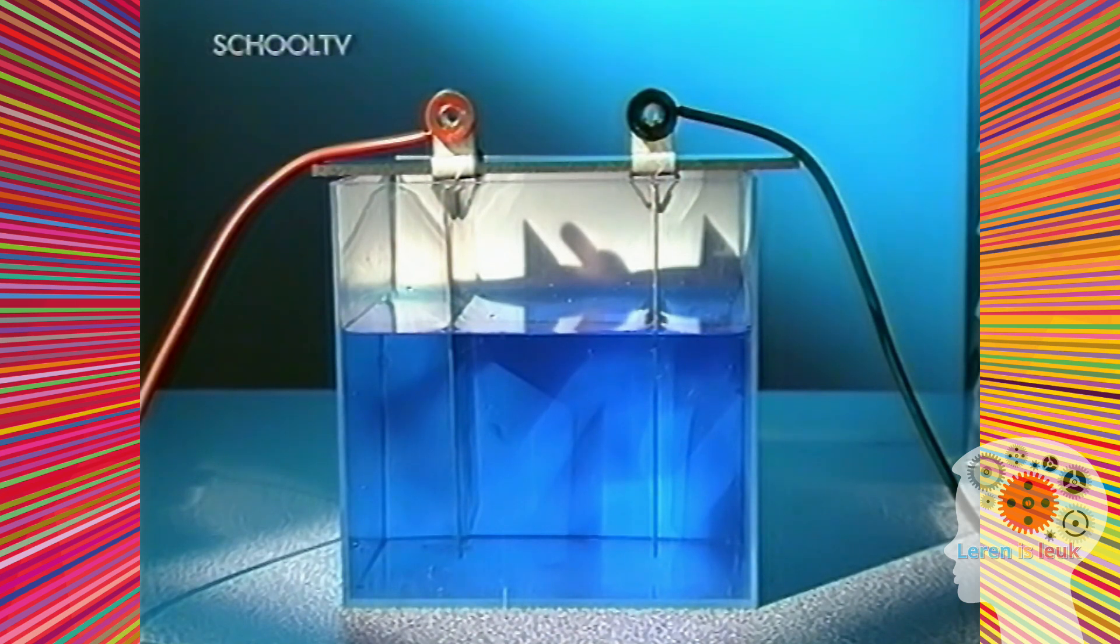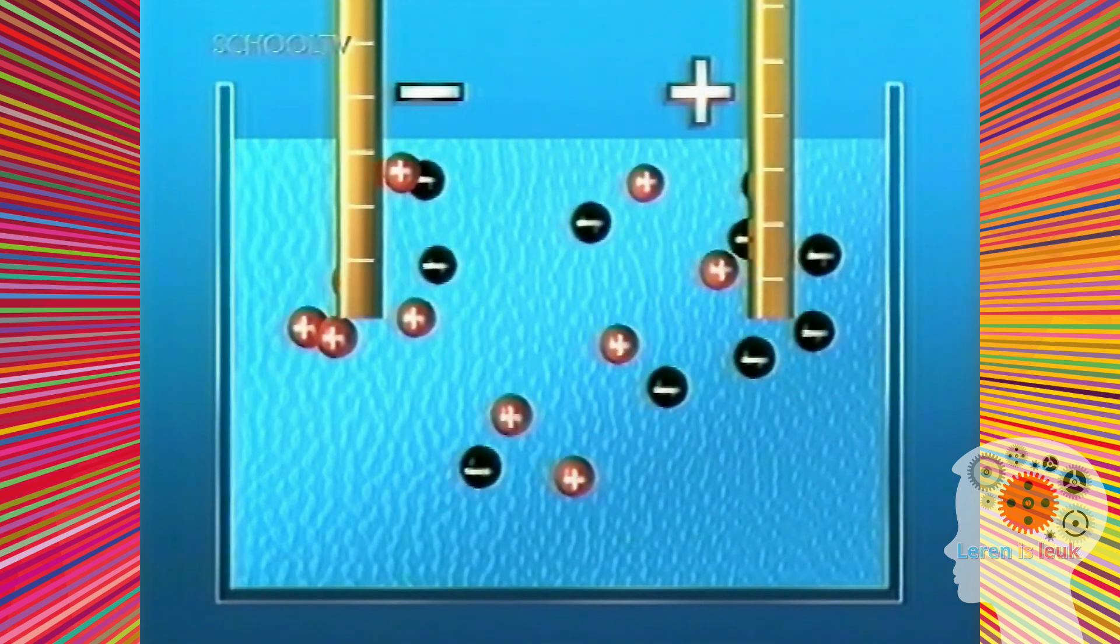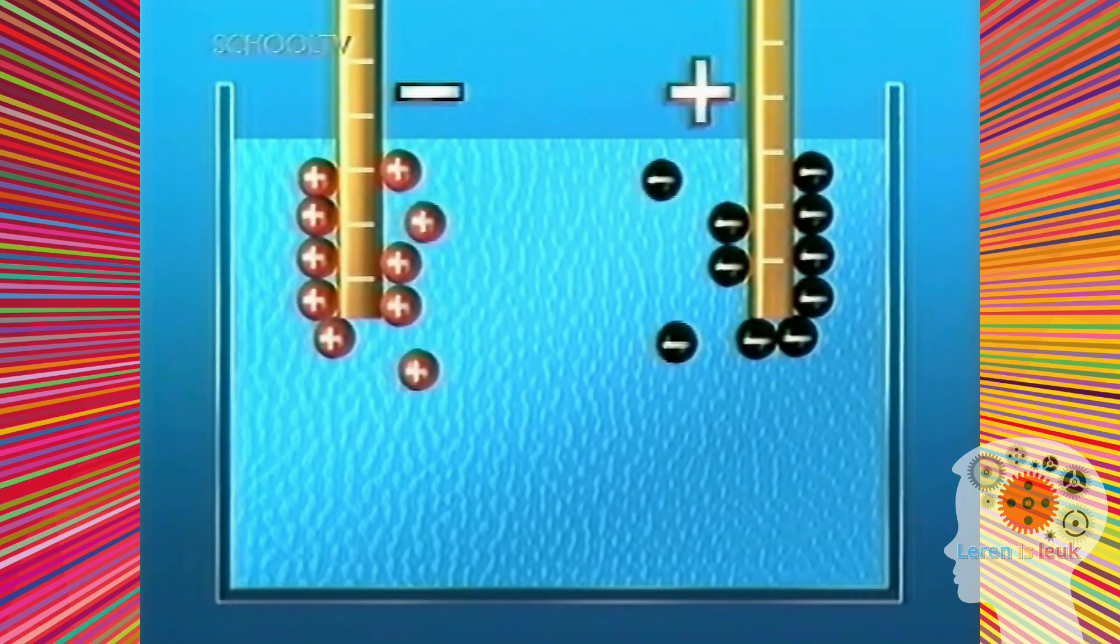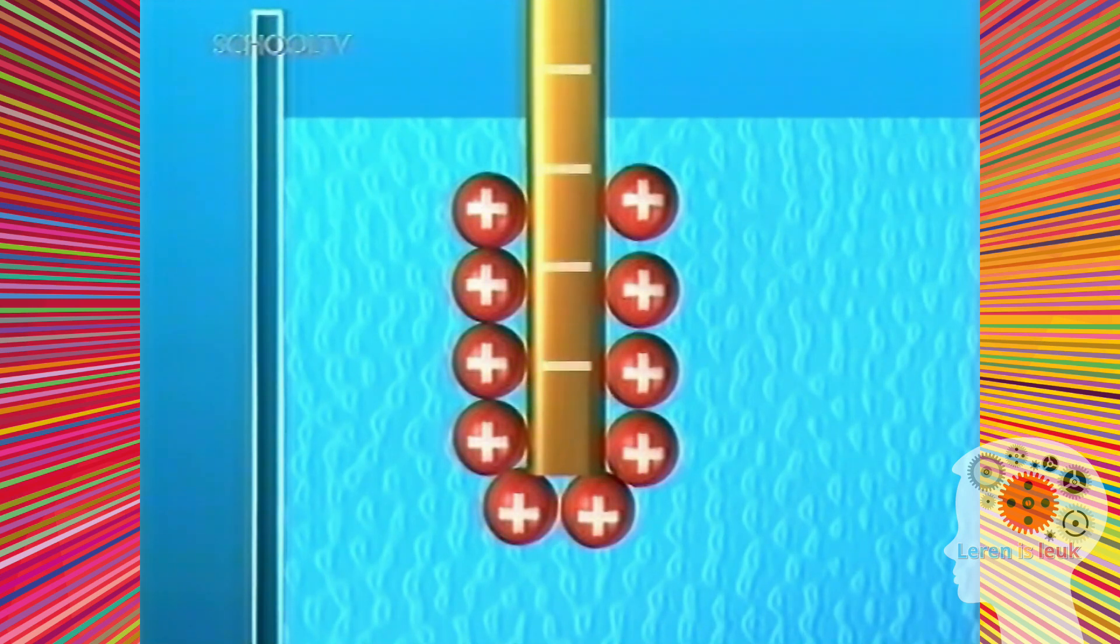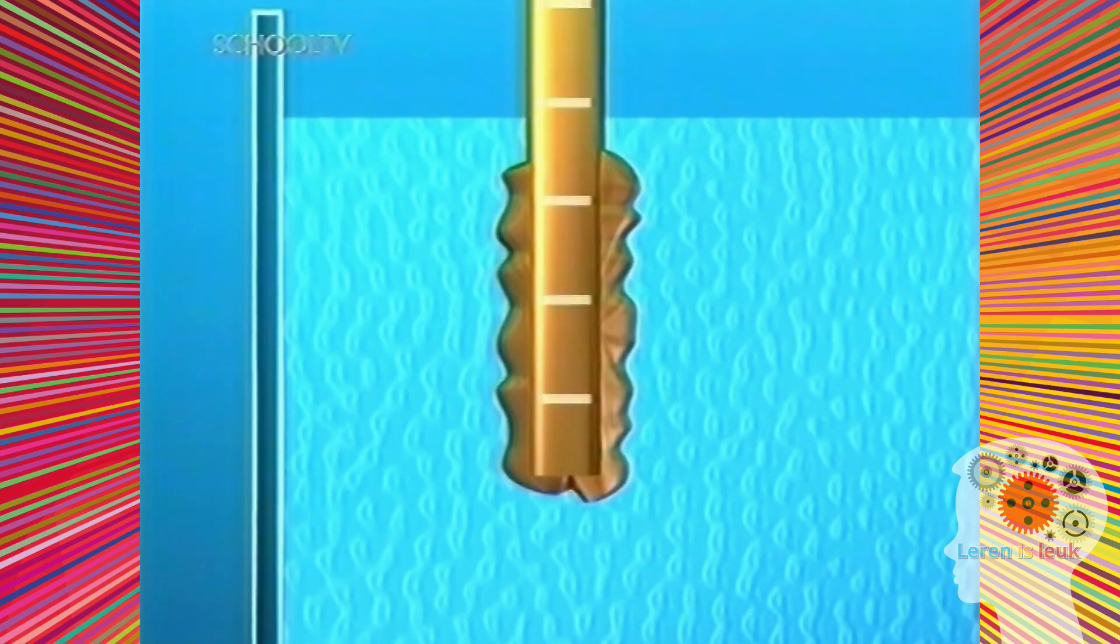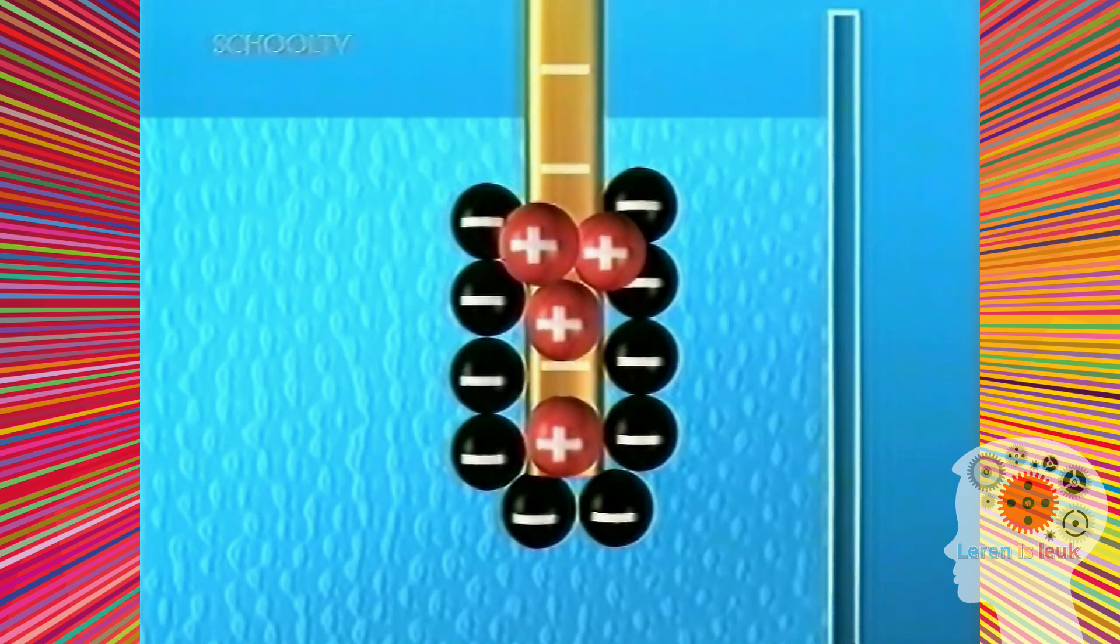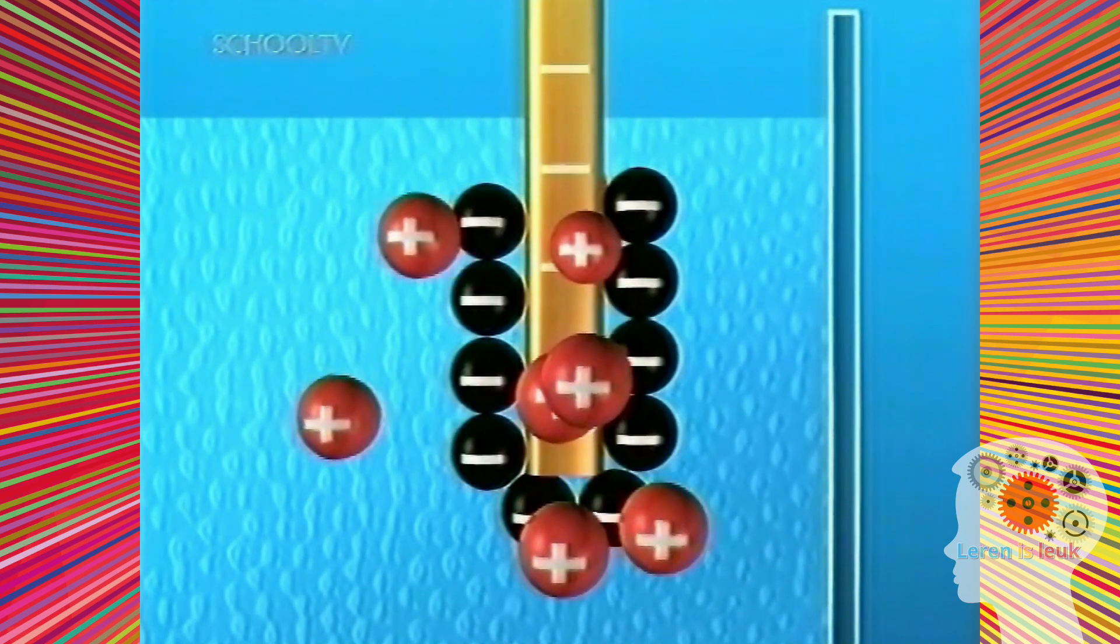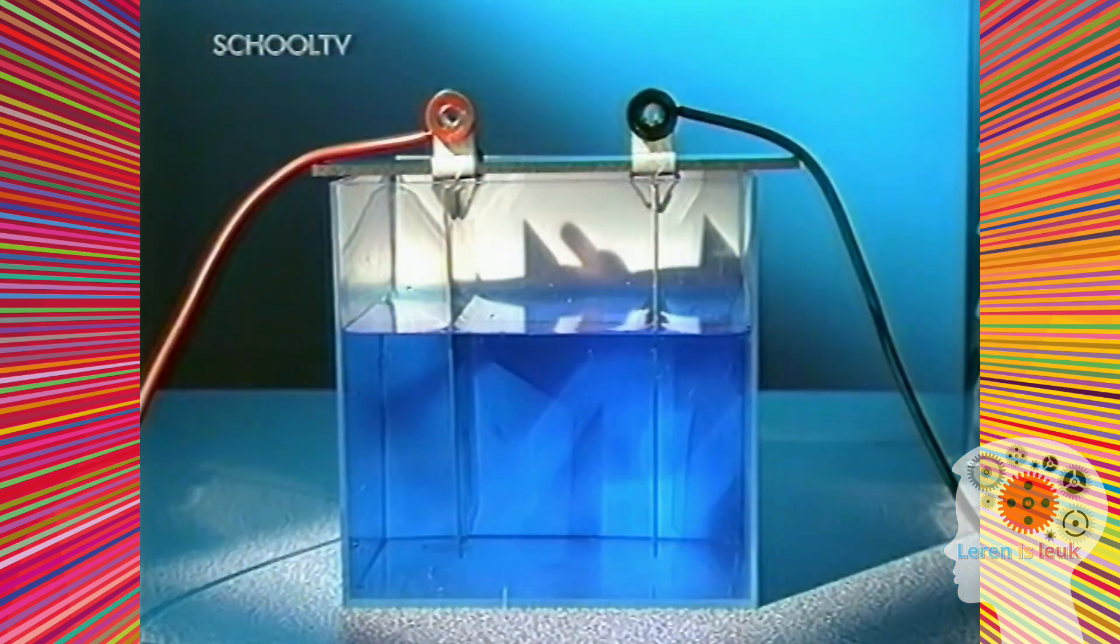Om die verandering te verklaren, moet je je voorstellen dat je de deeltjes in de kopersulfaatoplossing kunt zien. Er zijn positieve koperionen en negatieve sulfaationen. Als de stroom aangaat, worden de koperionen aangetrokken door de negatieve elektroden en de sulfaationen door de positieve. De koperionen nemen elektronen op, ze verliezen hun positieve lading en vormen een laagje koperatomen op de metalen strip. Bij de andere elektroden doen de negatieve sulfaationen helemaal niets. In plaats daarvan worden de koperatomen in de metalen strip positief geladen ionen die in de oplossing oplossen. De ene elektrode wordt lichter, de andere wordt zwaarder.